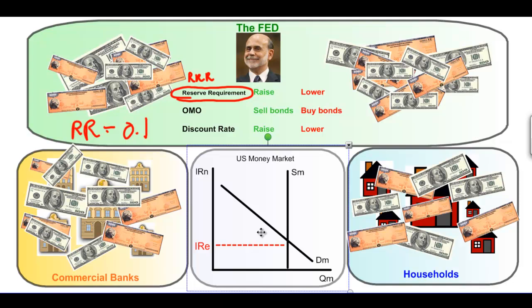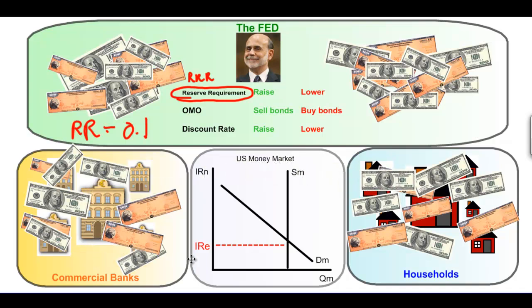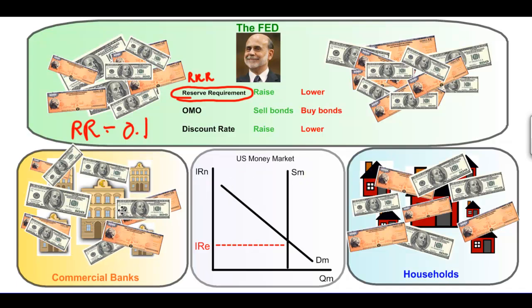Reducing the reserve requirement allows more money from household deposits to be kept at commercial banks and not at the Fed. Money required to be kept at the Fed cannot be lent out by commercial banks. Therefore, a lower reserve requirement means more money is available to be lent out. The increase in the supply of liquid money brings down borrowing costs and makes more money available to lend to households, firms, and other borrowers to help pay for consumption and investment.